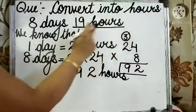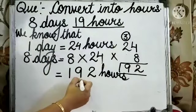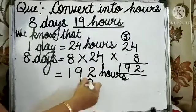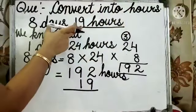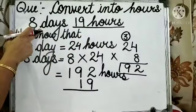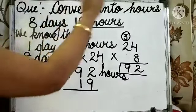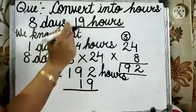Now, we have to add these 19 hours to our calculated answer, because we need to calculate total hours. The question was 8 days and 19 hours. We converted the 8 days into hours, and now we have to add these 19 hours.